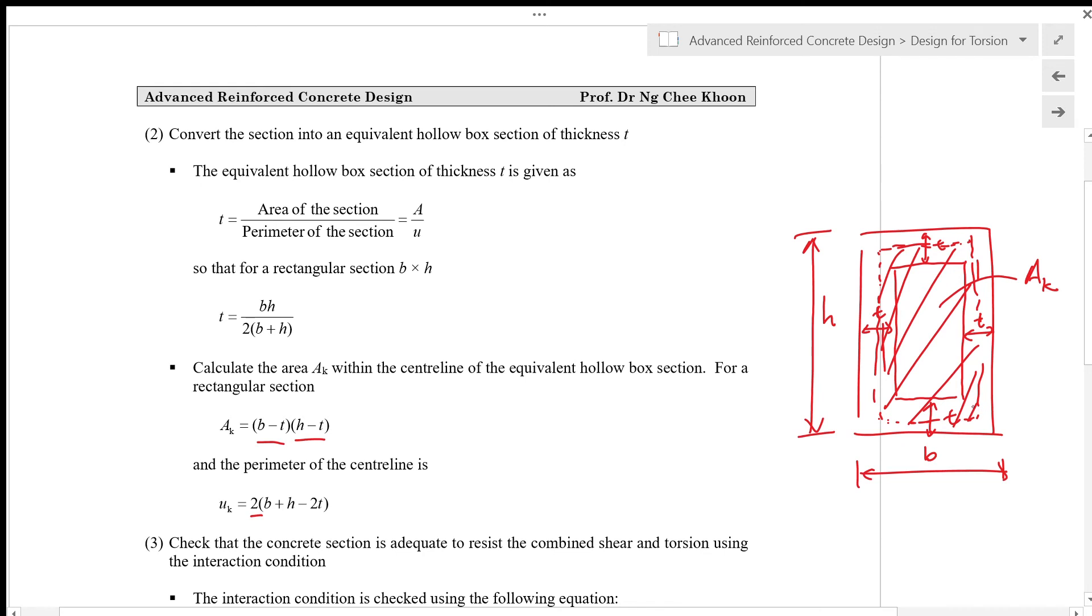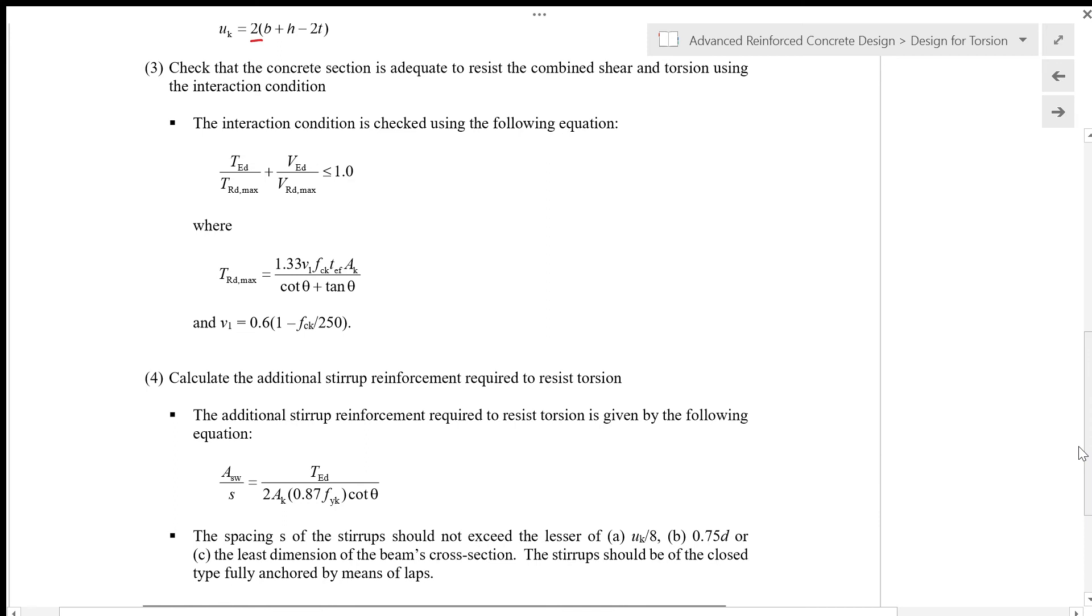Thirdly, we check that the concrete section is adequate to resist the combined shear and torsion using the interaction condition. The interaction condition is checked using the following equation: TED/TRD max + VED/VRD max ≤ 1.